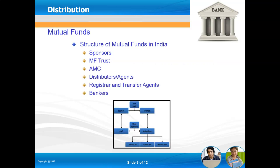The structure of a mutual fund in India begins with sponsors — a bank or any institution. They form a mutual fund trust, which must be approved by SEBI, the Securities Exchange Board of India. The trust then forms an Asset Management Company with fund managers and professionals who devise various schemes — index funds, sector funds, industry-wise funds. Distributors and agents sell units to customers on behalf of these mutual fund companies.